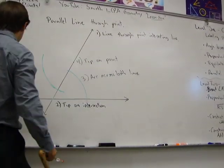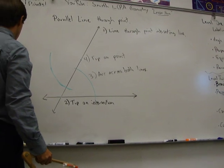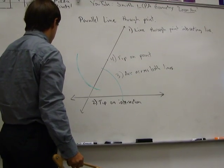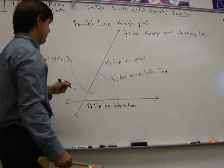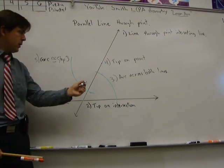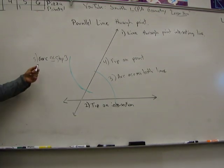Okay, so step five, arc congruent to step three. So this arc has the same measure as this arc. That's step five.